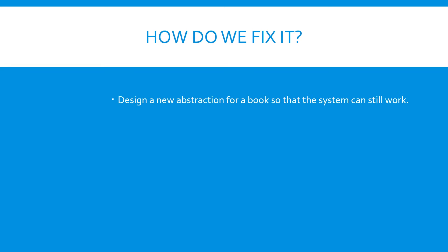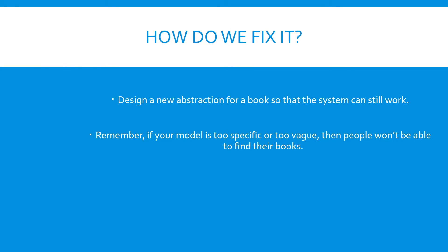So we need to fix it. We need to design a new abstraction so that users can still take out books. The problem is, the abstraction has to be just right. If it's too specific, then people won't be able to find their books.